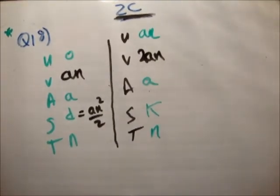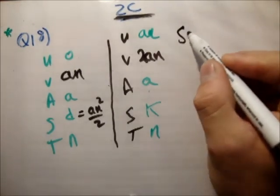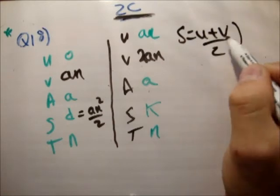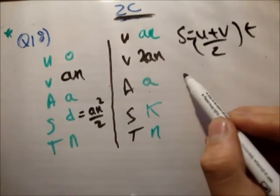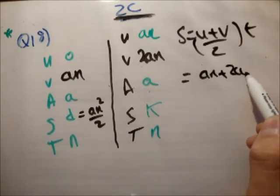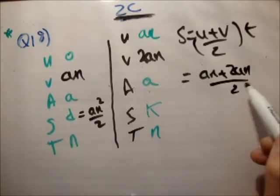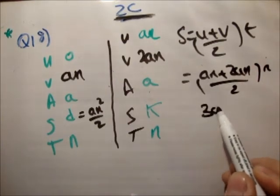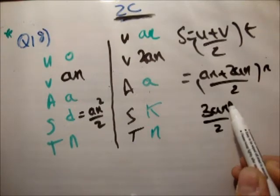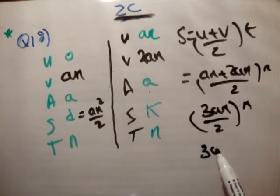Next of all, we'll go for the distance. S is equal to u plus v over 2 times t. Like that. Is equal to an plus 2an over 2 times n, 3an over 2 times n, 3a n squared over 2. 3a n squared over 2.